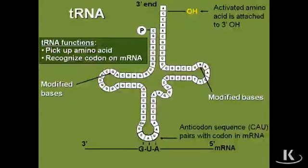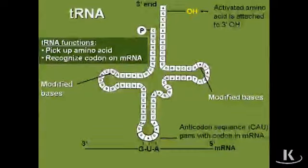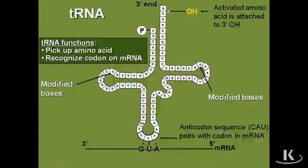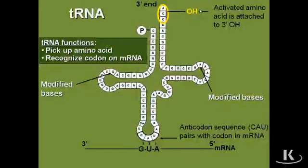The functions of transfer RNA are twofold. Number one: to pick up the proper amino acid. And number two: to recognize the codon on the messenger RNA. There are two important parts to each transfer RNA. Number one is that three prime hydroxyl group where the amino acid is going to be covalently attached — and notice it's always a CCA residue here, to which the incoming amino acid is going to covalently bond to the transfer RNA.